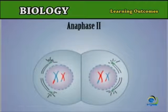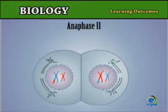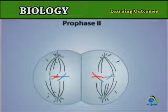By anaphase II, chromatids part company and migrate to opposite poles of the cell. Note: the chromatids become the chromosomes of the daughter cells.